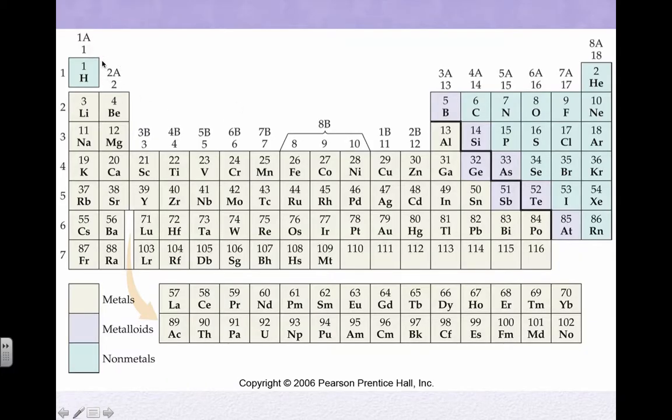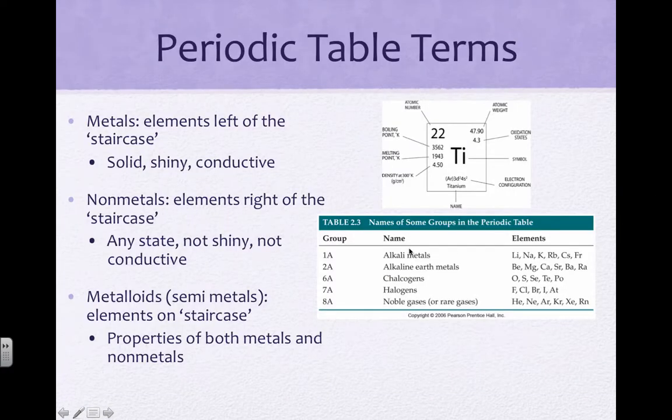These numbers at the top of the column are different ways to refer to groups. Group 6A, sometimes referred to as the oxygen family, is also listed here. But the other two that are more important are the halogens and the noble gases.